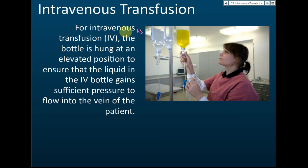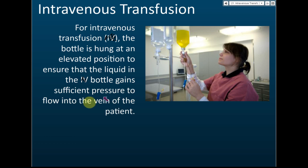For intravenous transfusions, the drip bottle is hung at an elevated position — higher than the patient. This is to ensure that the liquid in the bottle gains sufficient pressure to flow into the veins of the patient. If the patient is lying down, the bottle must be placed higher than the patient so that there is enough pressure to send the liquid into the patient's body.